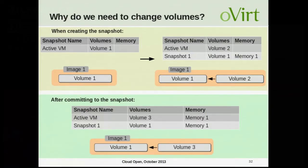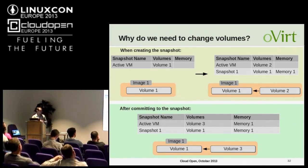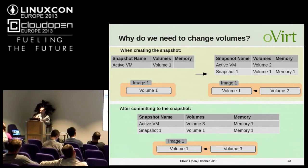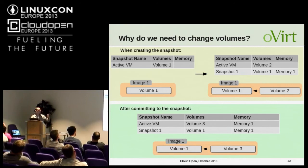One property we always need to change in the VM properties are the active volumes. When we created snapshot one, the active volume of image one was volume one, saved that way in the VM properties. After committing to snapshot one, volume three is the active volume of image one. By default, if we don't change the properties, the VM will have the same properties it had when the snapshot was created. So we must change the VM properties to replace the active volume of image one from volume one to volume three.